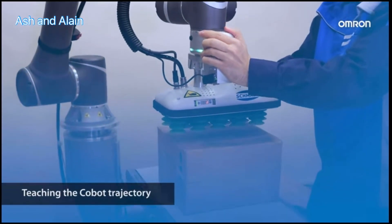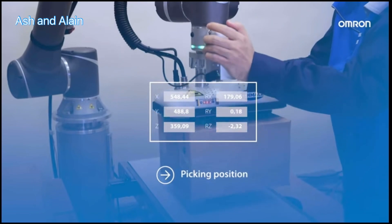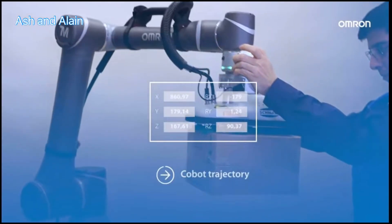The COBA trajectory can be easily defined by teaching from the starting picking point, step by step up to the different positions.